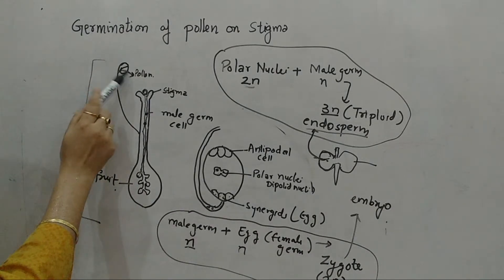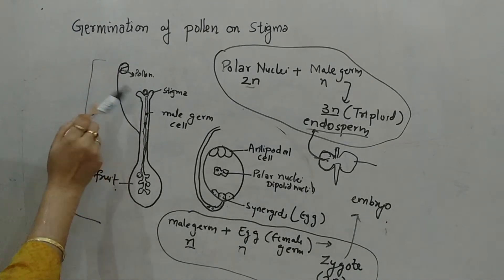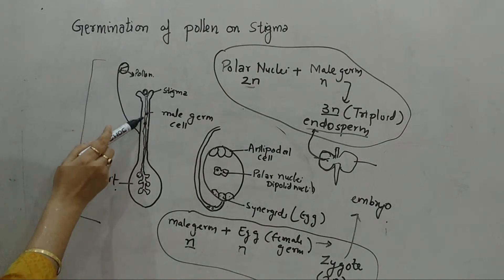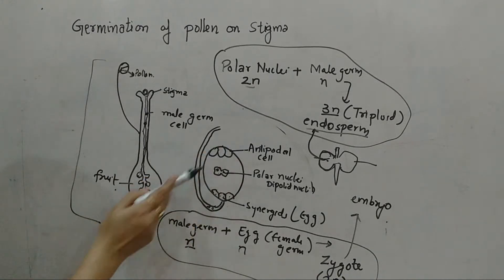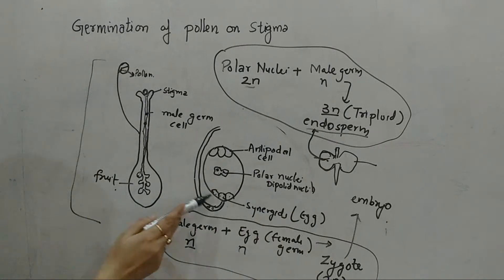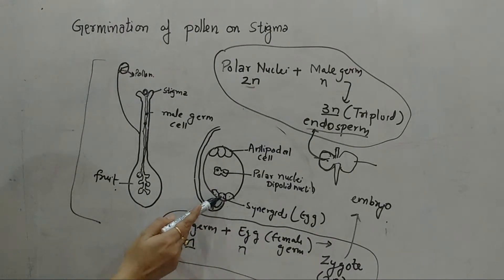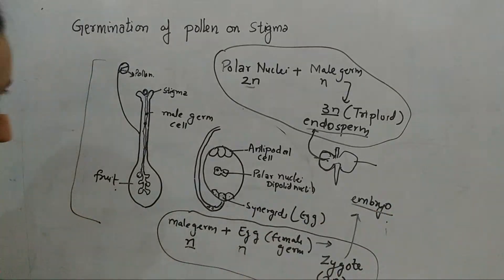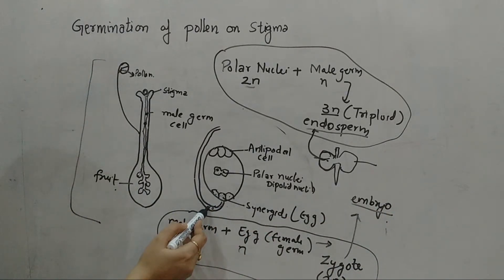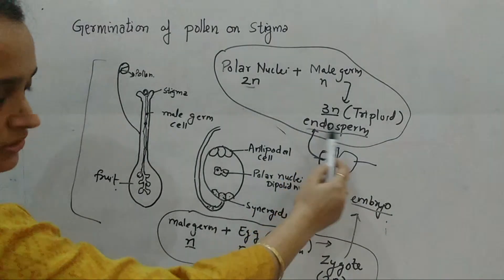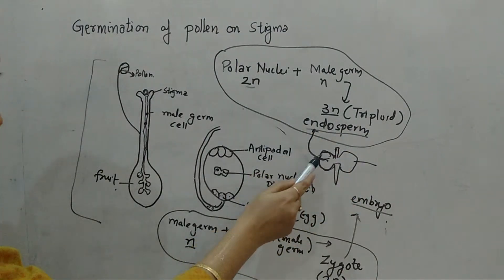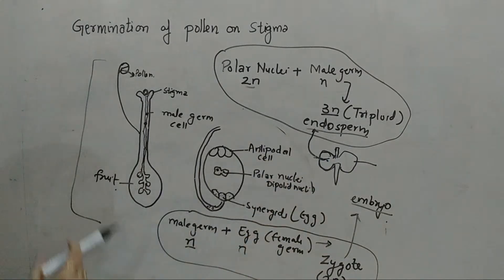To summarize: pollen is transferred from the anther to the stigma. Two male germ cells are released into the pollen tube and reach the ovule, where three pairs of cells are present — antipodal cells, polar nuclei, and synergids. One male germ cell reacts with the egg to form the zygote, which develops into the embryo. The other male germ cell reacts with the polar nuclei to form a 3n triploid nucleus, which becomes the endosperm providing nourishment to the plant. This is the whole germination of pollen on stigma.